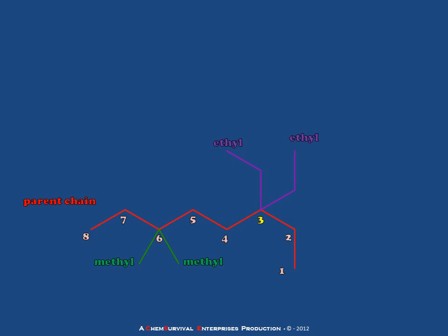So to name this compound, I'm going to call it an octane with methyls at the 6 position and ethyls at the 3 position, or 3,3-diethyl-6,6-dimethyloctane. I would not call this compound 3,3-dimethyl-6,6-diethyloctane.